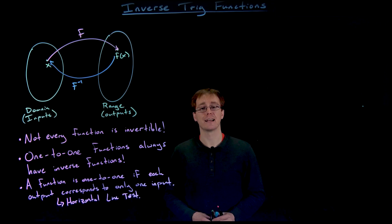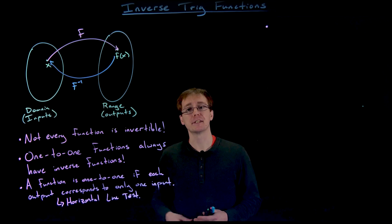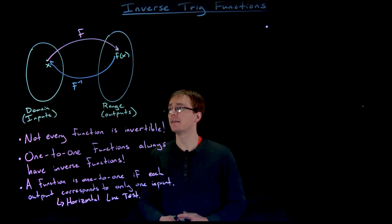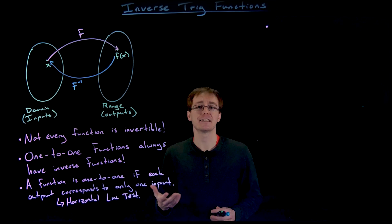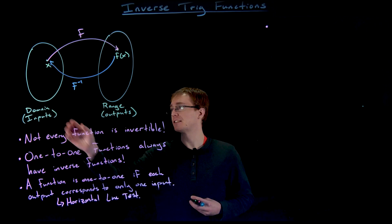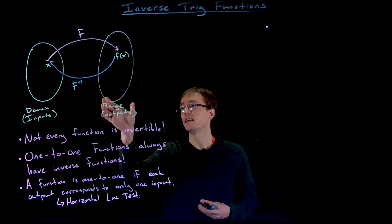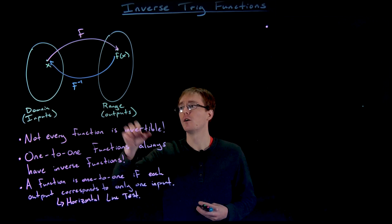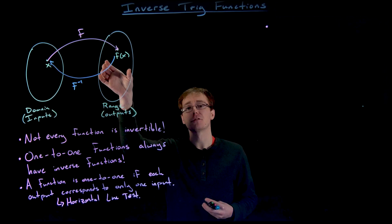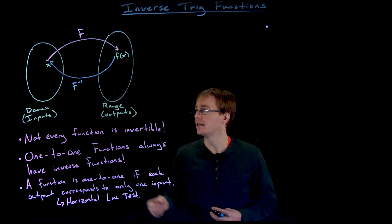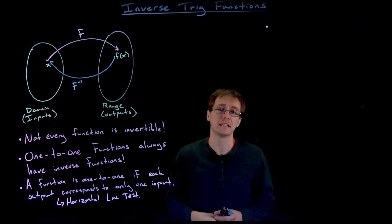Only our one-to-one functions are going to have inverses that are also functions. When we're looking at a function compared to its inverse, the domain and range just switch. If we have a specified domain and range for a given function f, the inputs of the inverse are the outputs of the function. So the range of the function becomes the domain of the inverse, and similarly the domain of the original function becomes the range of the inverse function.